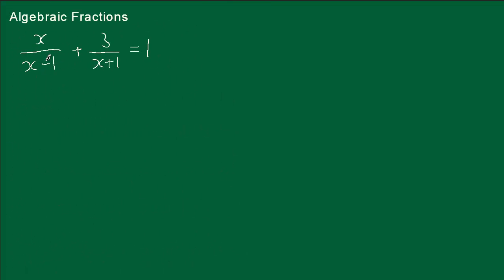With this one we've got an x minus 1 there and an x plus 1. Whenever you see the same number with a minus there and a plus there, you know you've got the difference of two squares. We're also going to make a common denominator by multiplying each fraction's denominator by the other, making equivalent fractions.